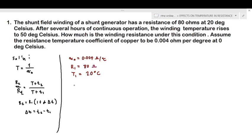So R1 is equal to 80 ohms. Then we have our T1 which is equal to 20 degrees Celsius. Then we will have our T2 which is equal to 50 degrees Celsius.